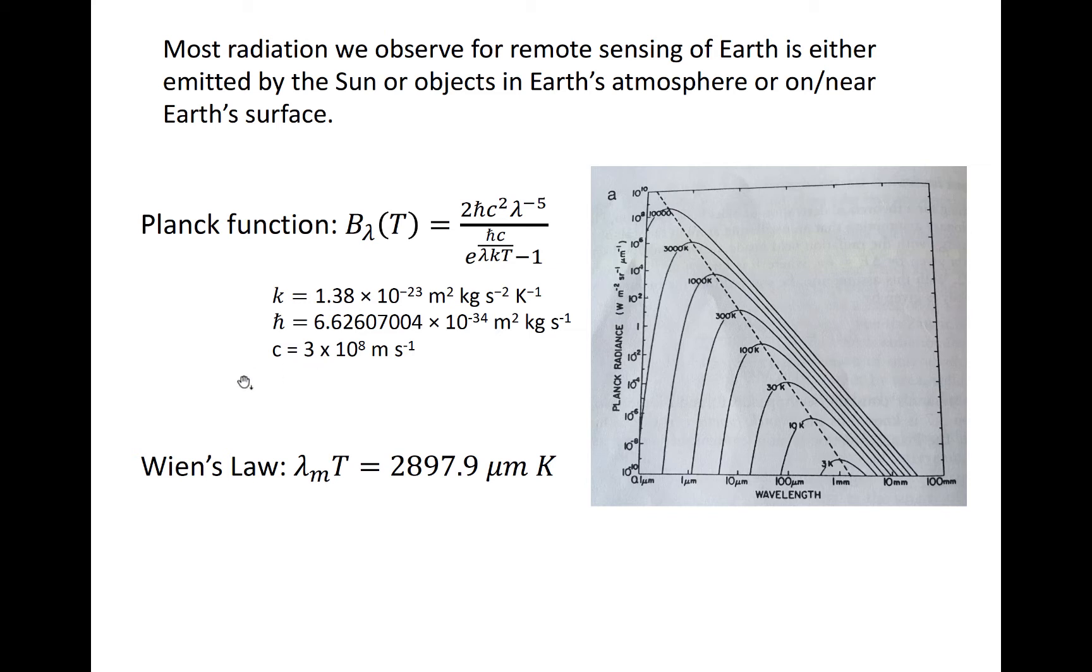The Planck function has a complicated looking mathematical structure that contains an inverse relationship with wavelength, but also an exponential in the denominator that includes both wavelength and temperature. The structure of the Planck function, plotted on a log-log plot, is shown at right, with the Planck radiance shown as a function of wavelength.